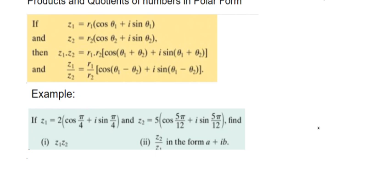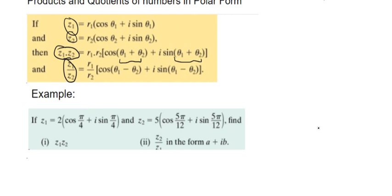This box looks complicated but it's just the general rules. If Z1 is R1 with theta 1, and Z2 is R2 with theta 2, then when you multiply them together it's going to be R1 times R2 and you add the two angles together. And if you're dividing the two of them, you do the opposite — you divide the two R's and subtract the two angles.